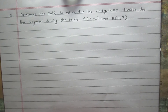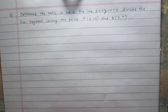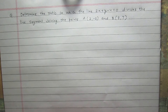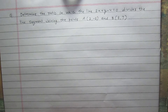Determine the ratio in which the line 2x plus y minus 4 equals 0 divides the line segment joining the points A and B, where the coordinates of point A are (2, -2) and the coordinates of point B are (3, 7).